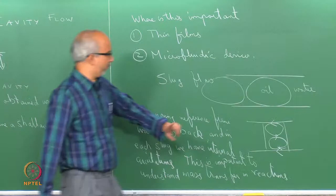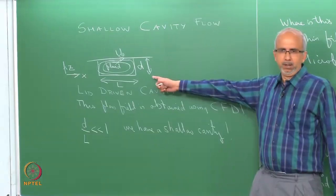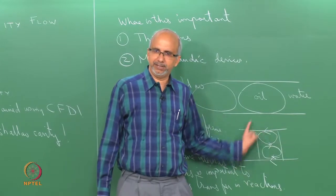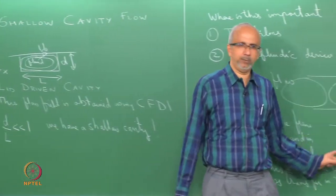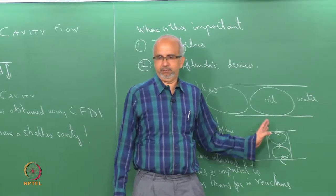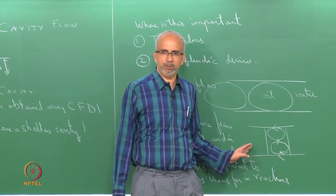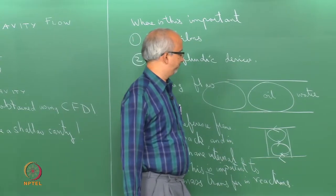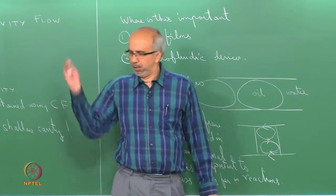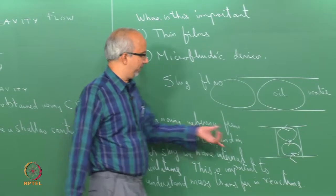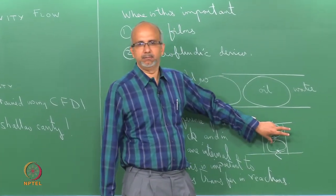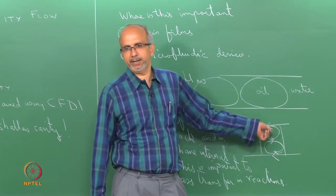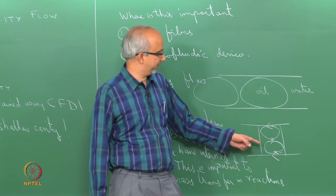This slug flow problem is very similar to the lid-driven cavity problem. You have a rectangular domain and the only difference is the boundary condition — here I have a solid wall, but there I have a liquid-liquid interface. If you neglect interface deflection, the perpendicular component of velocity is zero but you have a tangential component. This is motivation for doing this kind of shallow cavity analysis. Typically in microchannels, the slug length can be 5 to 10 times the diameter, so we can try to get some understanding using the shallow cavity limit.